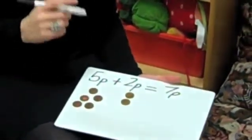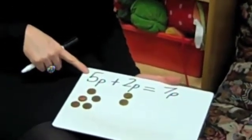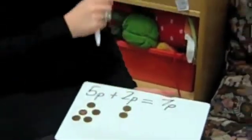I can also count on from the largest. So the largest is 5p so I could go 5, 6, 7, 7p.